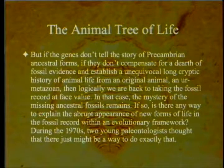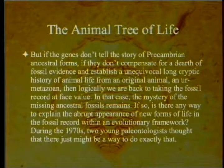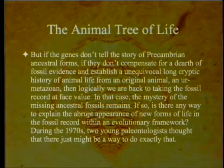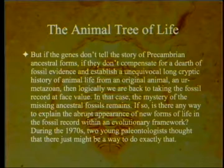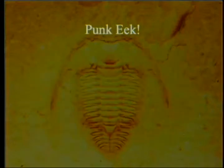But if the genes don't tell the story of pre-Cambrian ancestral forms — if they don't compensate for a dearth of fossil evidence and establish a univocal long cryptic history of animal life from an original metazoan — then logically we are back to taking the fossil record at face value. In that case, the mystery of the missing ancestral fossils remains. If so, is there any way to explain the abrupt appearance of new forms of life in the fossil record within an evolutionary framework? During the 1970s, two young paleontologists thought that there just might be a way — and now we transition into punctuated equilibrium.